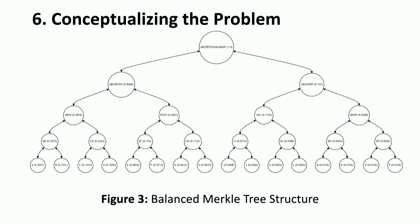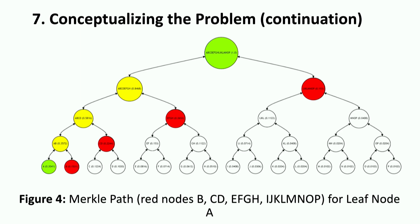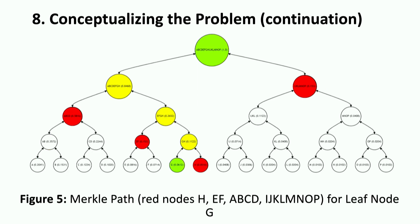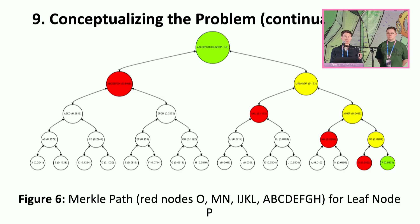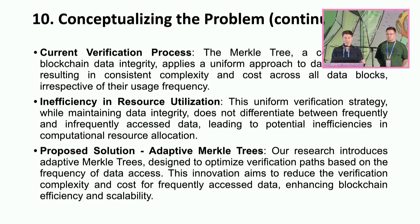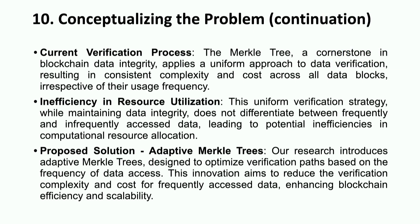To conceptualize the problem: in regular blockchain designs, Merkle trees act as a balanced tree, and for any frequency of use of the address, for any leaf node, the search complexity is averaged out. The problem is that even for a high-frequency used leaf node, the search complexity is on average the same as for a low-frequency used node, which leads to significantly higher computational cost for accessing the data. The inefficiency really comes from their verification strategy while maintaining data integrity.